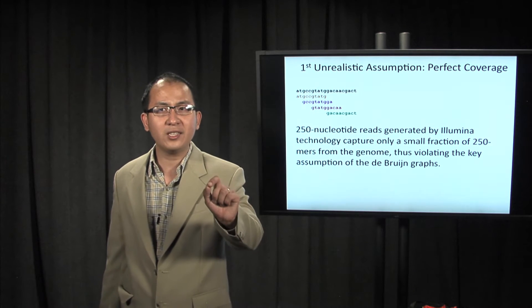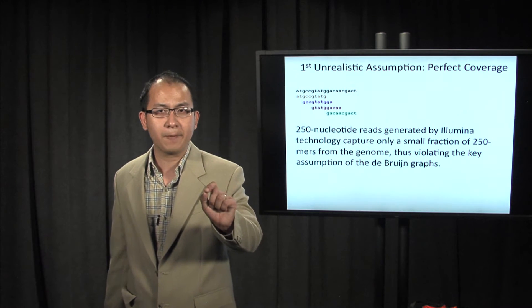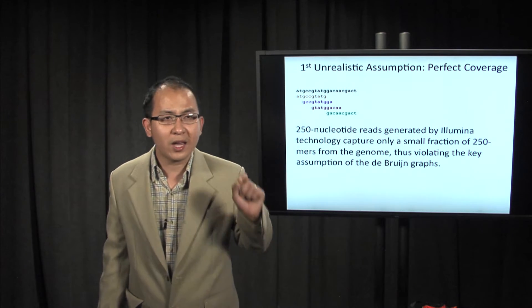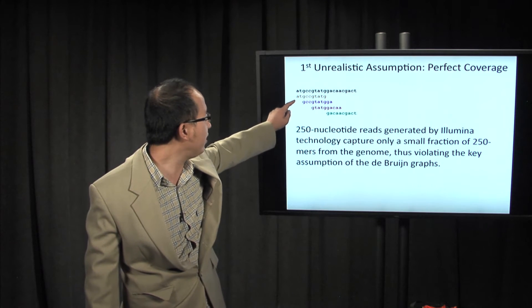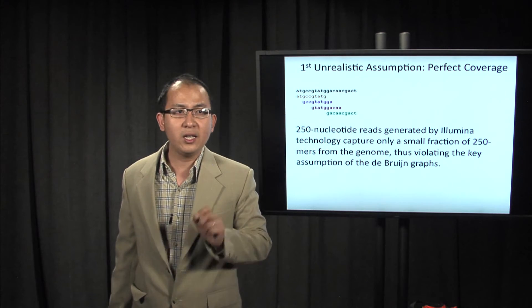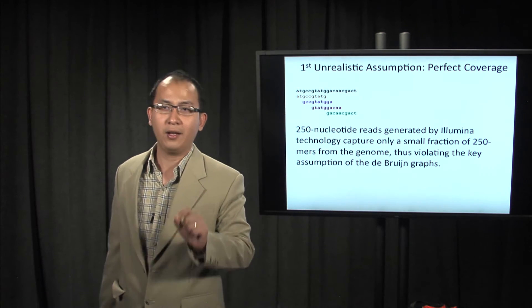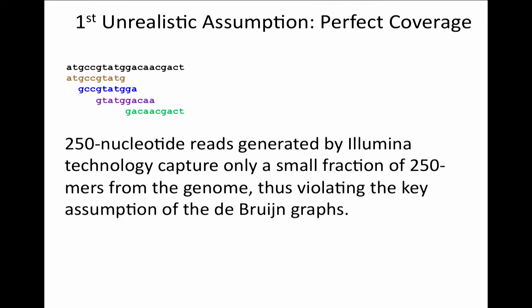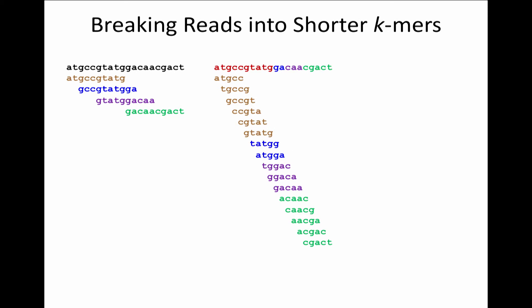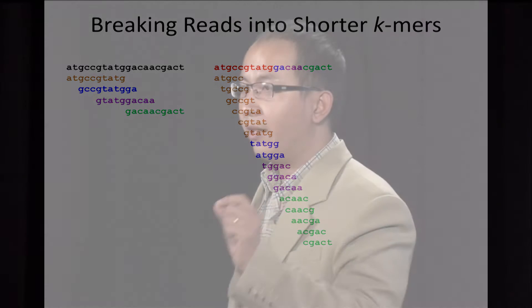Let's go to the first unrealistic assumption: perfect coverage. Here we have the genome on the top, and here are the four reads. Clearly, we don't have perfect coverage in this case, which violates the k-mer assumption of the de Bruijn graph. What you can do is break the reads into shorter k-mers, and after this operation, the k-mer assumption of the de Bruijn graph holds.